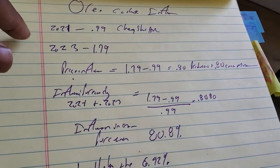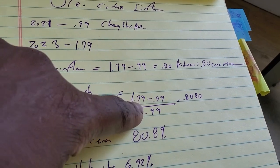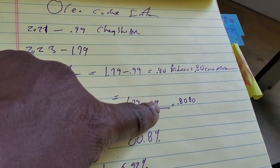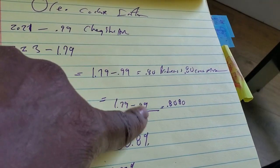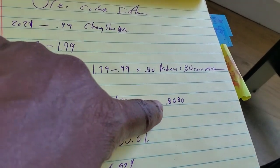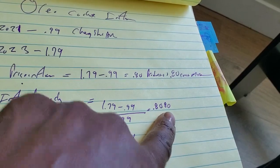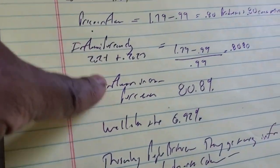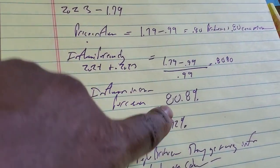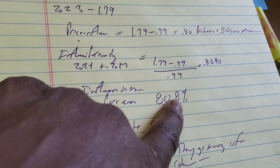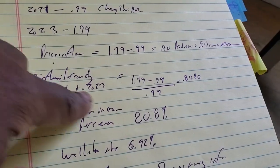When you calculate the price percentage, you take the new price $1.79, minus the old price $0.99, divided by $0.99. You come up with 0.808 — that number basically says between 2021 and 2023 there was an 80.8% inflation increase. That's just a percentage.